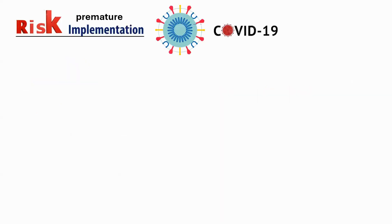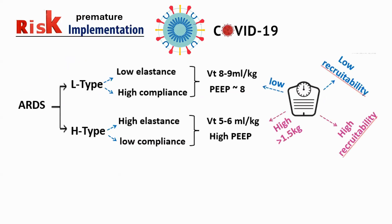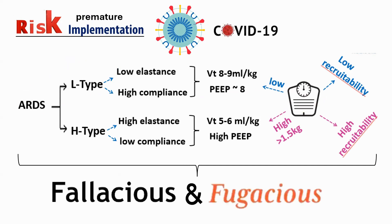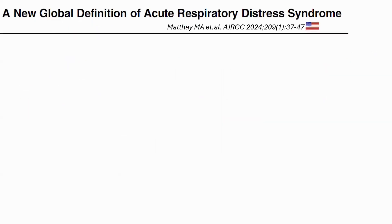Premature implementation happened in COVID where we differentiated ARDS between L-type — low elastance, high compliance — and H-type — high elastance, low compliance. We even said L-type should use higher tidal volume and H-type lower tidal volume. All of this was later found to be incorrect. ARDS is ARDS; there is no L-type or H-type. This was fallacious, and that is the problem with premature implementation.